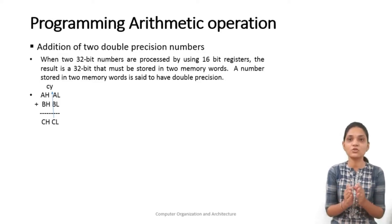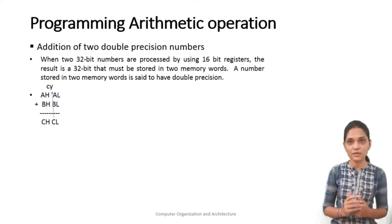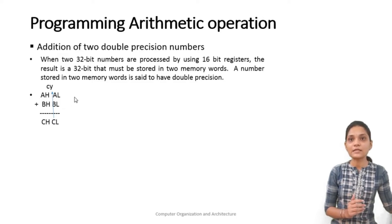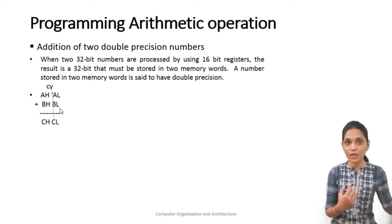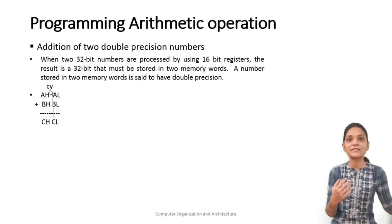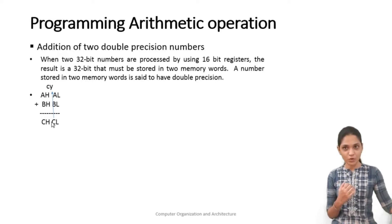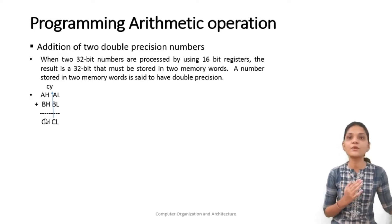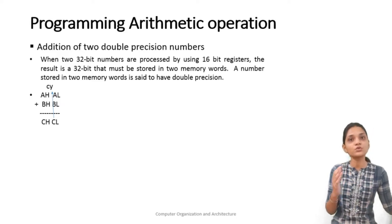Higher order 16-bit will be in CH, lower order 16-bit will be in CL. For the addition operation of double precision numbers, we first add the lower order 16-bit AL and BL and store at location CL. By this addition there is a possibility that a carry is generated. If any carry is generated then you have to add it into the higher order addition. So you will do the operation AH + BH plus the previous carry and store the result at location CH. This is the basic operation for addition of two double precision numbers.